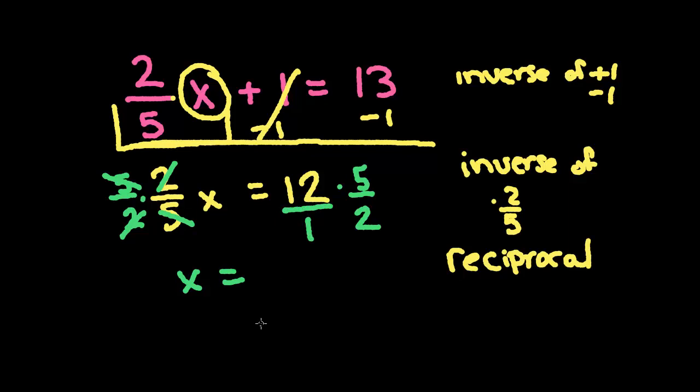On this side, I'm going to turn the 12 into a 12 over 1. And now I'm going to cross-cancel. 2 goes into 2 once. 2 goes into 12 six times. 6 times 5 is 30. So my final answer is x equals 30.